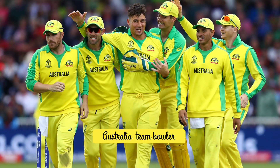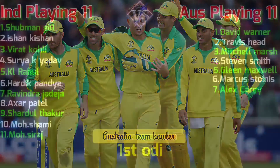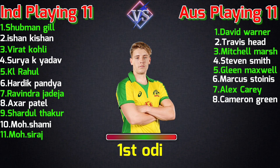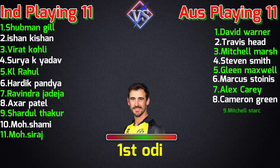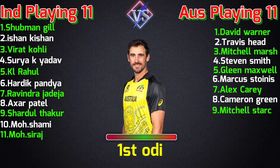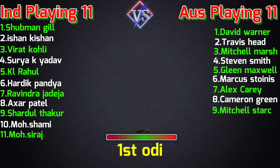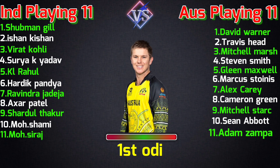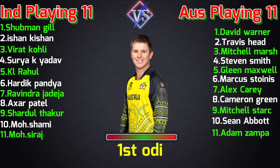Team Australia bowlers: number eight Cameron Green, all-rounder; number nine Mitchell Starc, fast bowler; number ten Sean Abbott, all-rounder; number eleven Adam Zampa, spin bowler.